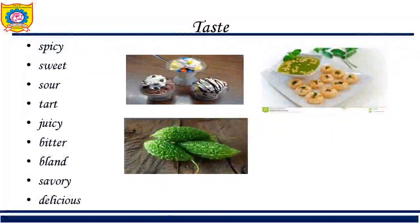Here we have adjectives related to different senses — touch, taste, smell, and sight. Starting with taste: 'spicy' means tikka in Hindi, for example 'the spicy curry smells good, mom has cooked quite a spicy curry.' Next is 'sweet,' which everyone knows, and 'sour,' which means khatta.